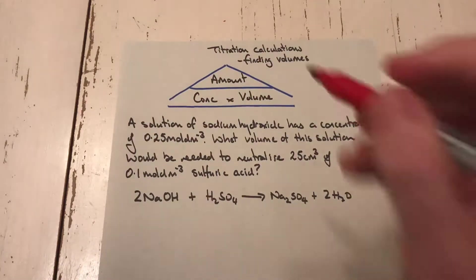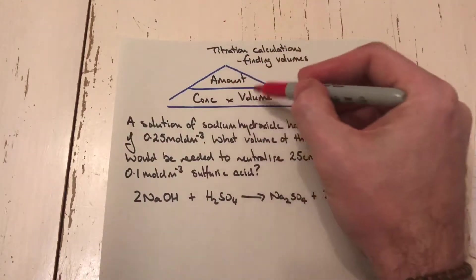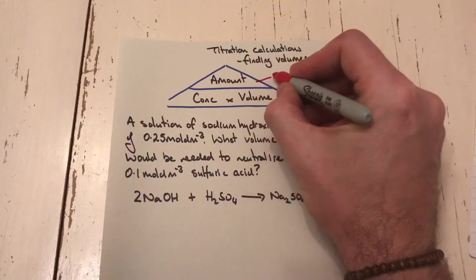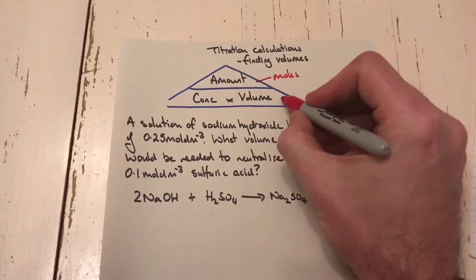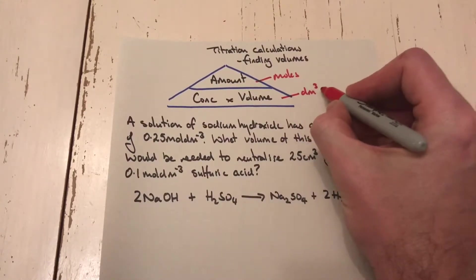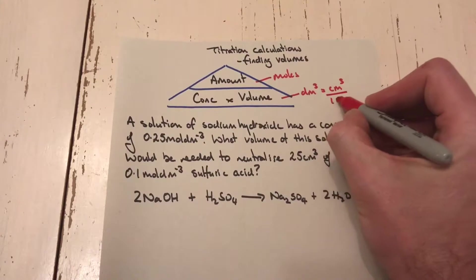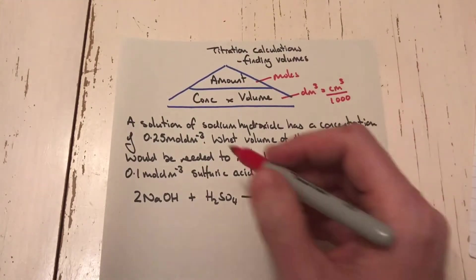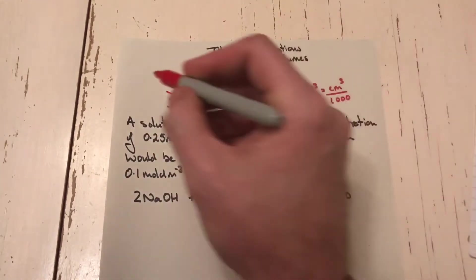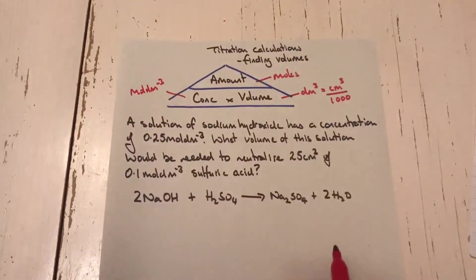A reminder that using the triangle — amount, concentration, and volume (a 'chicken vindaloo' to remember it) — the amount is measured in moles, the volume must be in dm³. Volumes given in cm³ must be divided by 1000 to convert. Concentration units are moles per dm³.